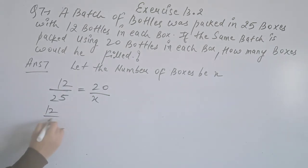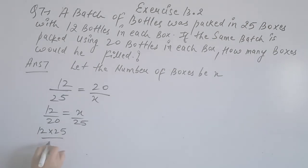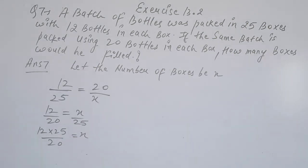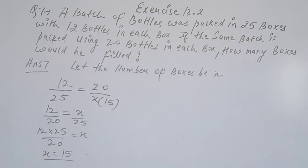So 12 divided by 20 equals x divided by 25. We find x = 12 × 25 ÷ 20 = 15. That means fifteen boxes would be filled. The answer is fifteen boxes.